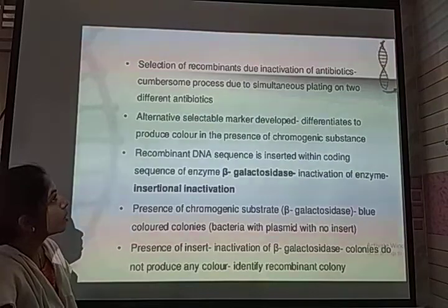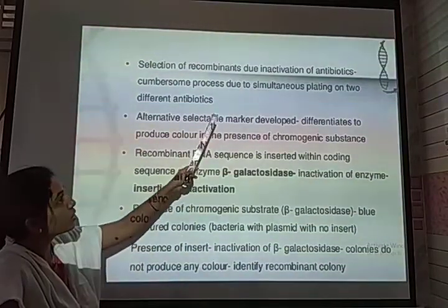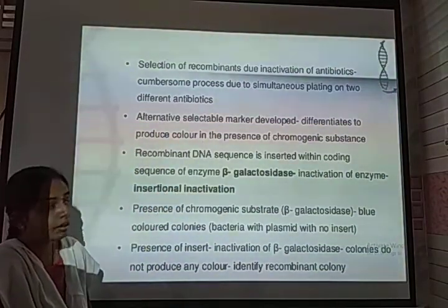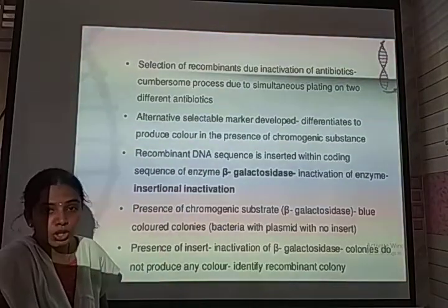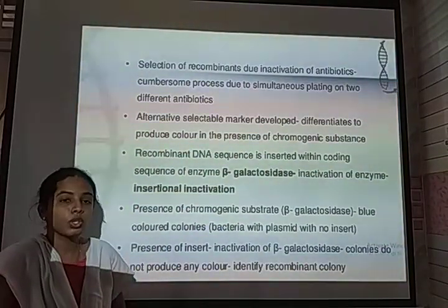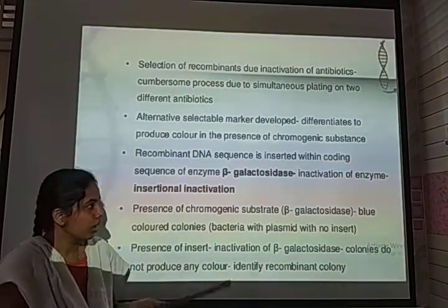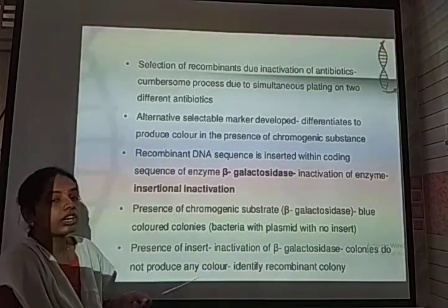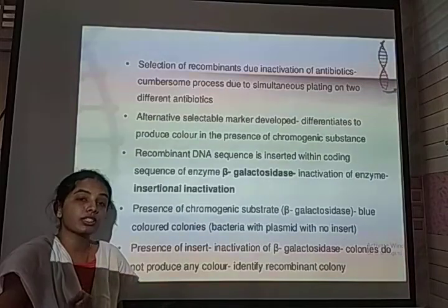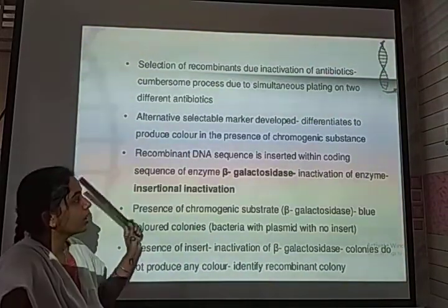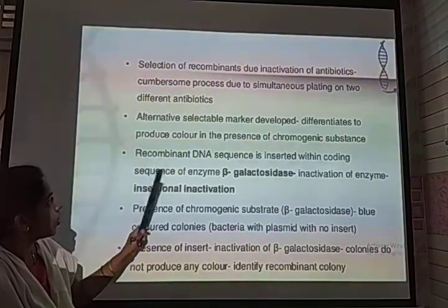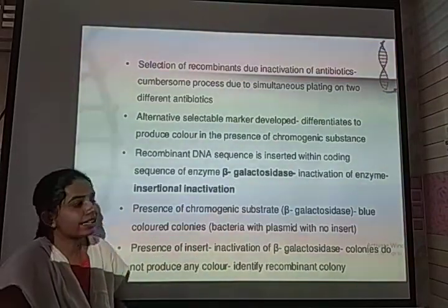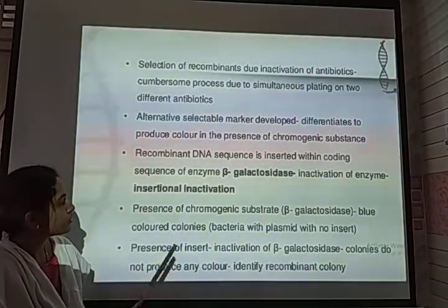During recombination, along with antibiotic resistance inactivation, alternative selectable markers have been developed. These produce colored colonies by adding a promoting substance to distinguish which plasmid is a transformant and which is a non-transformant. Non-transformants are usually reflected with a blue color, whereas transformants — plasmids that consist of recombinant DNA — are distinguished with a colorless composition. The recombinant DNA sequence is inserted along with a sequence of enzyme called beta-galactosidase.